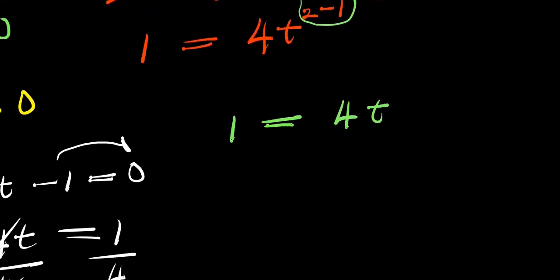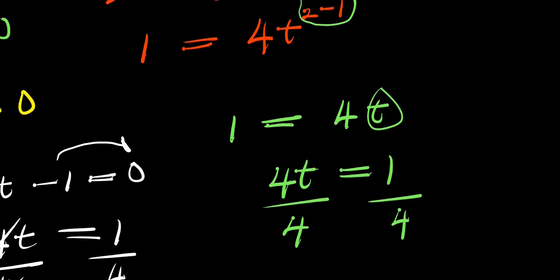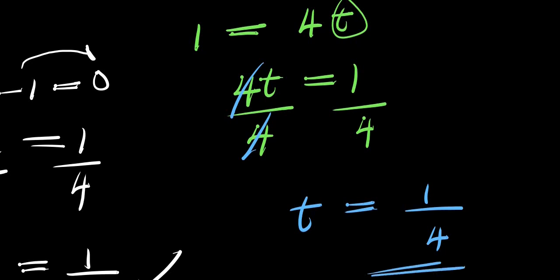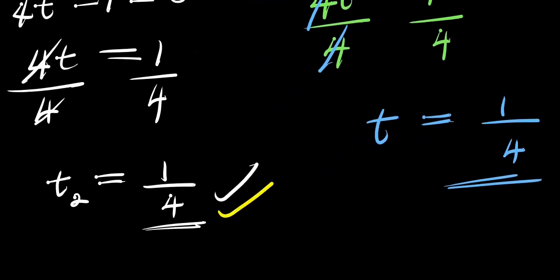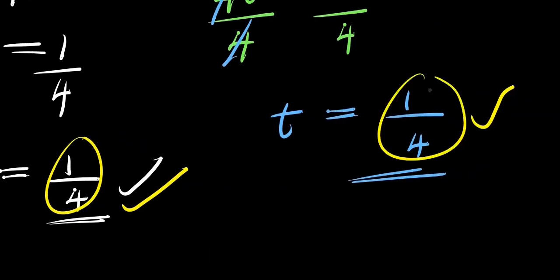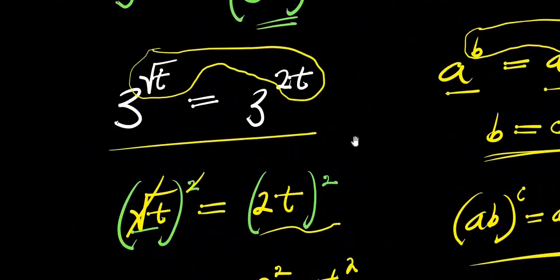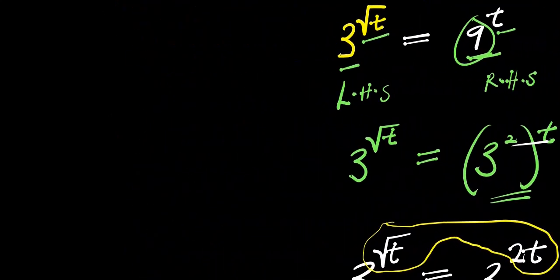Solving for t, I rearrange to get 4t equals 1. Dividing both sides by 4 gives t equals 1 over 4. So this second method also gives 1 over 4. But notice that method two gives only one solution, whereas method one gave two different solutions. The next step will be to check all the solutions.